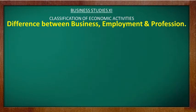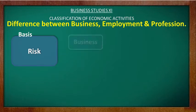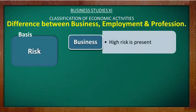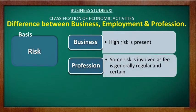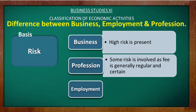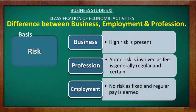The next difference is on the basis of risk. In business there is higher risk as profits are uncertain and irregular. In profession there is some risk involved, but fees are generally regular and certain. In employment there is no risk, as a fixed and regular pay in the form of salary is received by the employee from their employer.